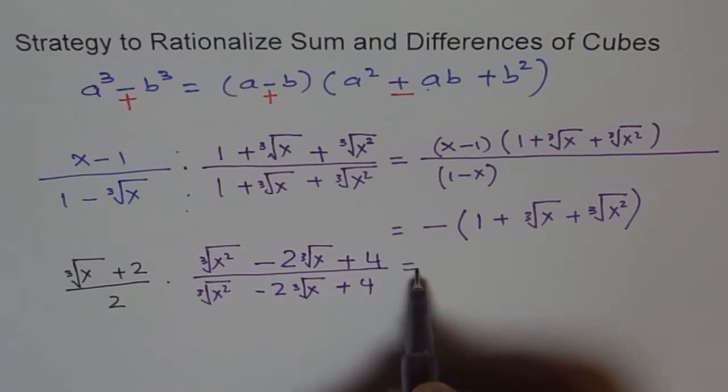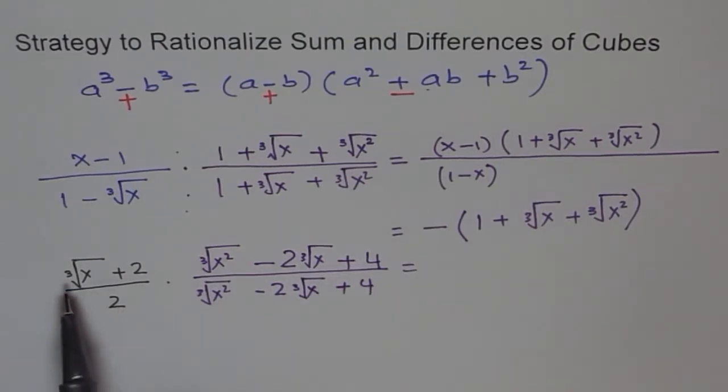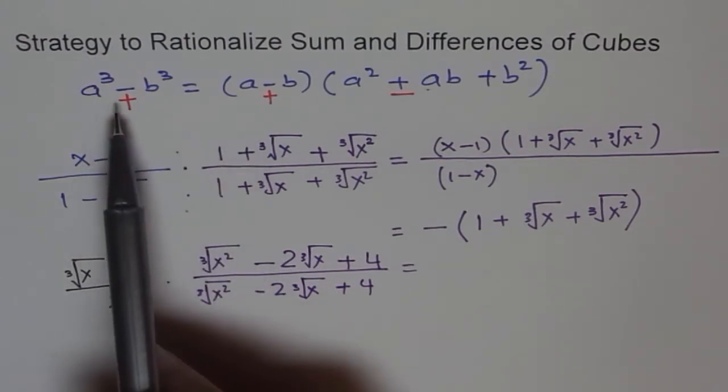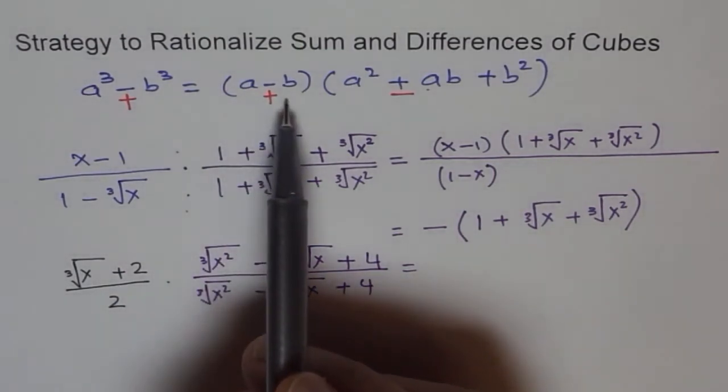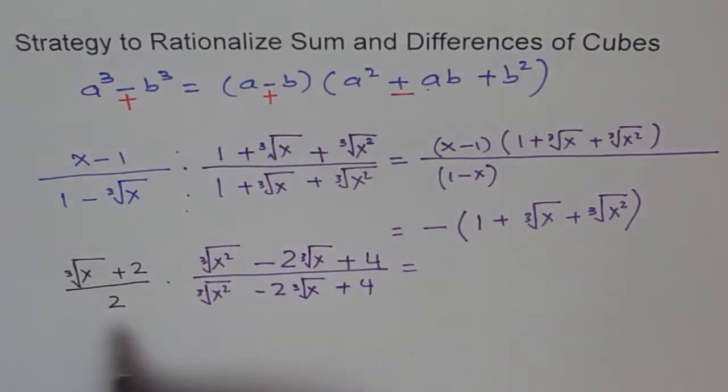So when you do that what do you get? You get a³ + b³ which is plus here. So we get a³ + b³ because this becomes a + b. This is the formula. In this case the formula is (a + b)(a² - ab + b²) equals a³ + b³.